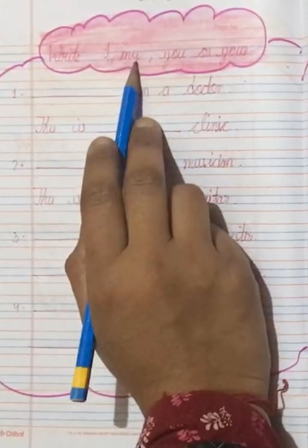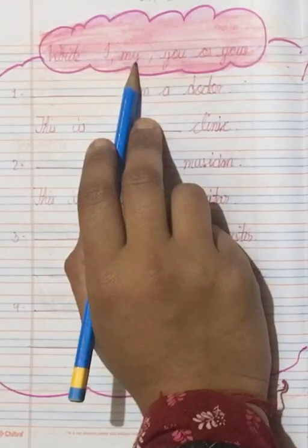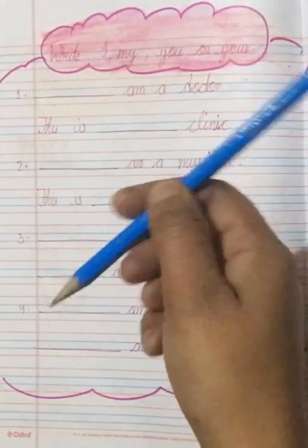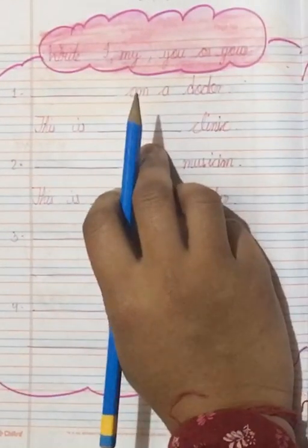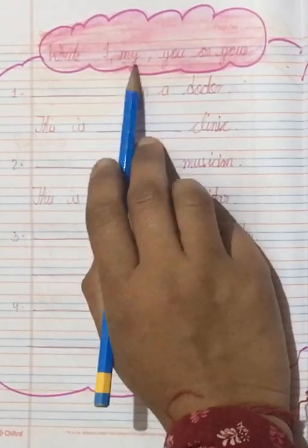Now my, my ka use ka haan par hota hai? Jahaan kisi ko batathe hai. This is my sister. This is my clinic. This is my guitar. Mtlalk kisi bhi thing ke liye. Jaisa mere paas pencil hai, m mei aapko batha rhoi ho, this is my pencil, and this is my eraser, and this is my bag. Aisai jahaan kisi ko batathe ho, toh my ka use karenghe.